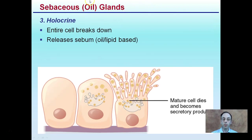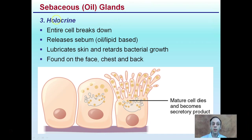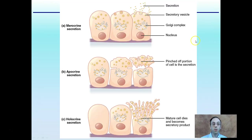Going back to oil glands for comparison: holocrine secretion means the entire cell breaks down, releasing sebum, which is oil and lipid-based — remember, that's hydrophobic. It lubricates the skin and retards bacterial growth, providing benefits to the body. Found on the face, chest, and back regions, the mature cell dies and becomes the secretory product. A summary slide shows the secretion type, the cell pinching off producing odor, and the entire cell breaking down producing that oily sebum.